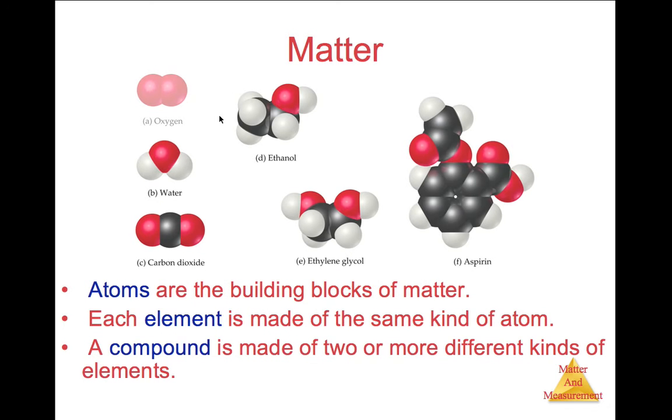A compound is made of two or more different kinds of elements. Notice in water, we have oxygen, and then we also have two hydrogens attached to it. And here are several other examples. The black spheres represent carbon, the white one's hydrogen, the red one's oxygen.